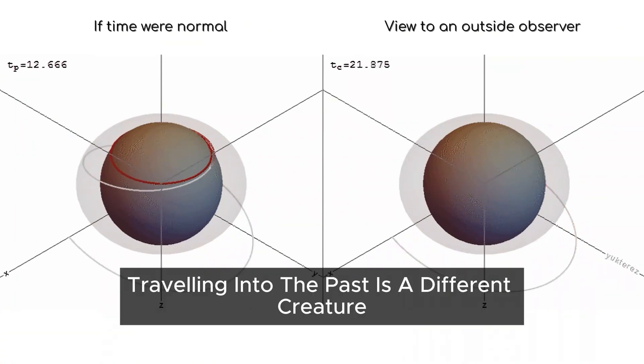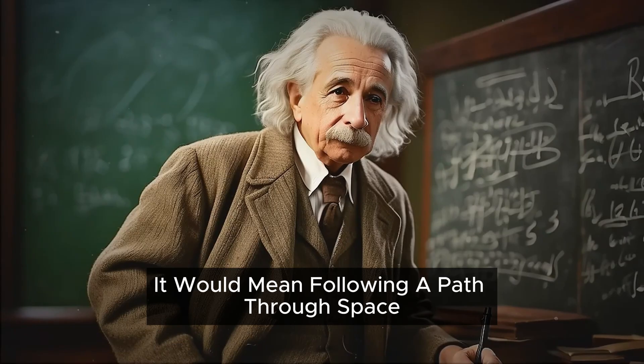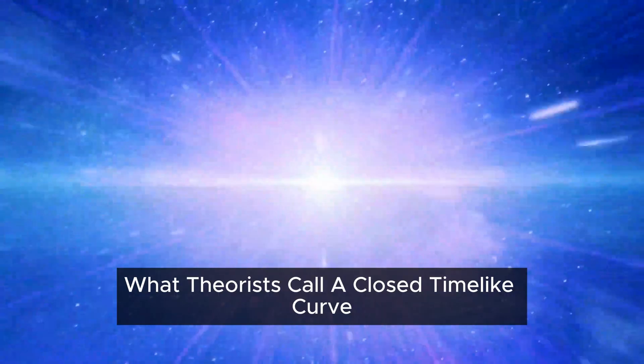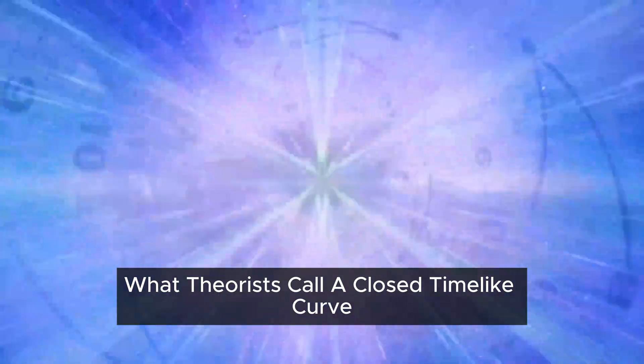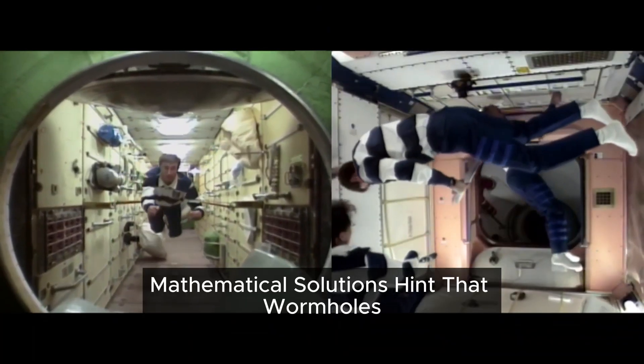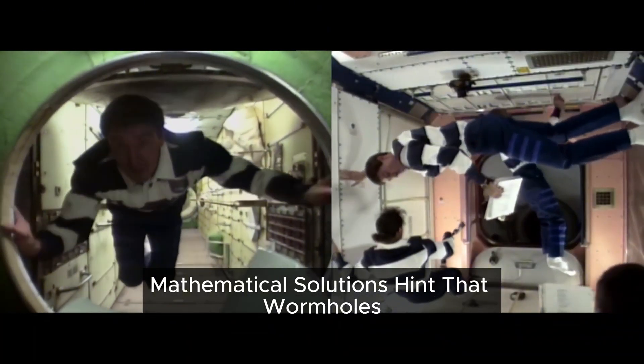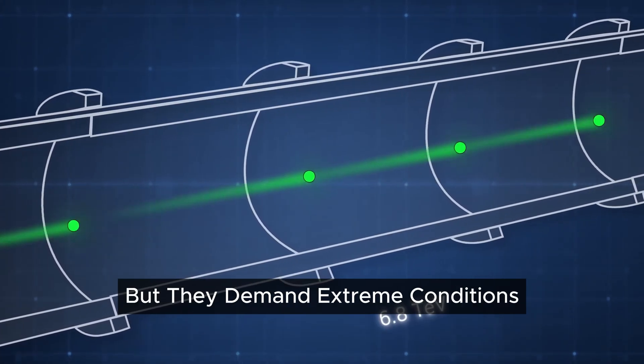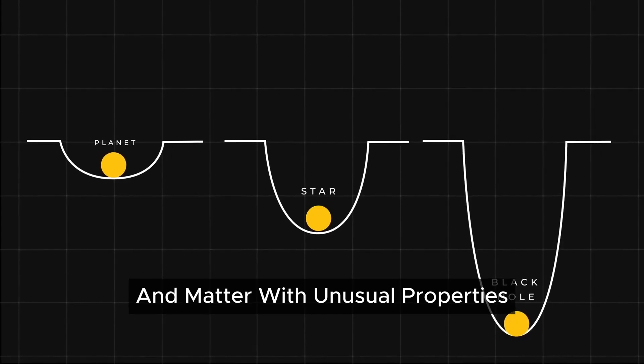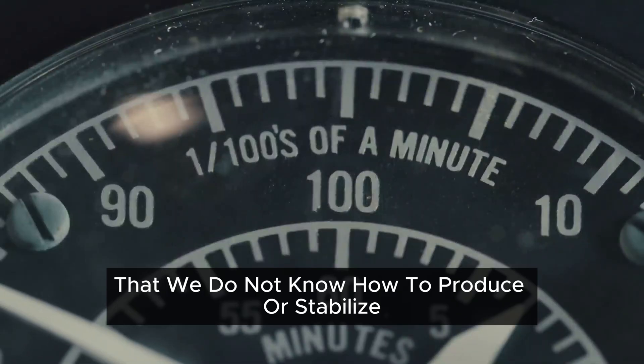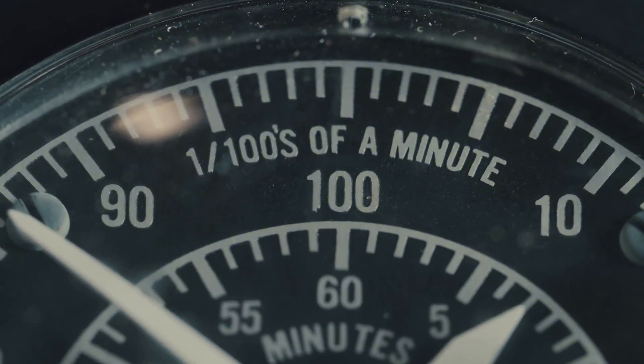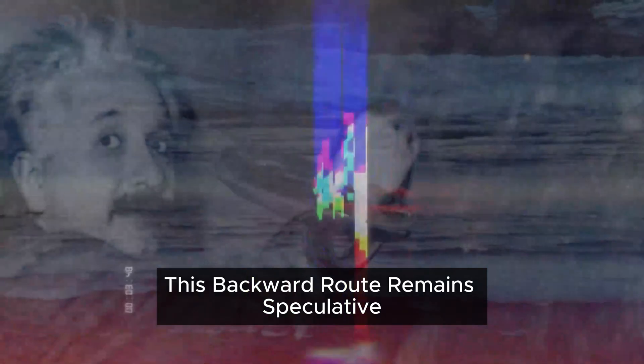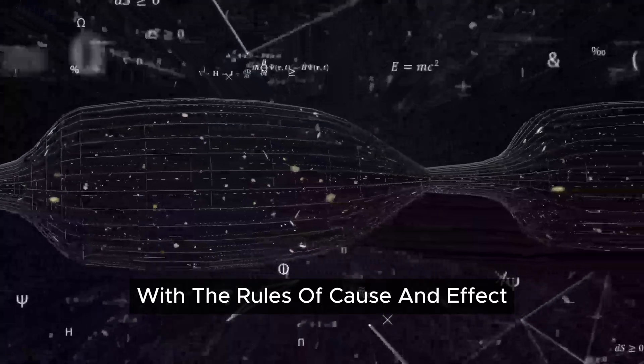Traveling into the past is a different creature. It would mean following a path through space-time that loops back to an earlier event, what theorists call a closed time-like curve. Unlike future travel, this backward route remains speculative and collides head-on with the rules of cause and effect.